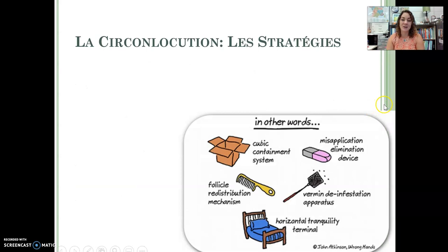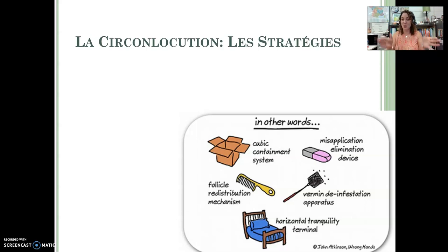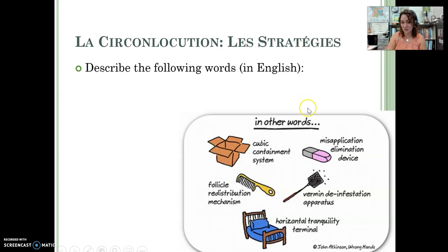So let's try these out. I want you to try these with a partner or a group. A horizontal tranquility terminal — these make me laugh. You don't have to get that specific with your descriptions, but these are all examples of circumlocution where instead of saying it's a box, it's a square, it's a container, you put stuff in it. These are all good ideas. How would you describe these words? You can stay in English for this — we're just practicing talking around the idea.